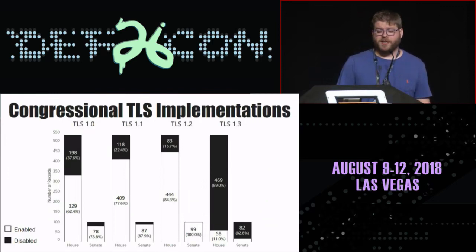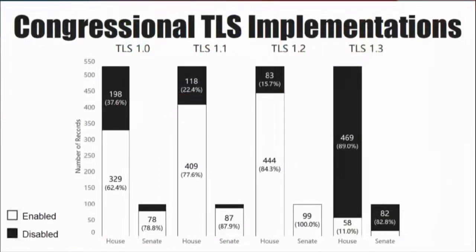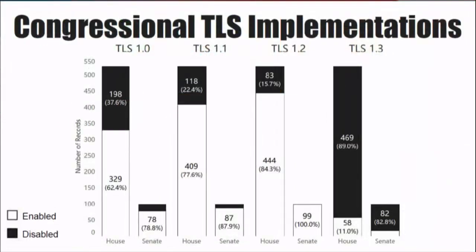If you look at some of the congressional TLS implementations, from left to right we have TLS 1.0, 1.1, 1.2, and 1.3. The giant bar is the total folks in the House who supported that version of TLS, and the tiny bars are the total number of people in the Senate. What you see is very small usage of TLS 1.3, which just came out. Most folks had TLS 1.2, fewer had TLS 1.1, and even fewer had TLS 1.0. And no one had SSL, which is kind of interesting — really wasn't expecting that.